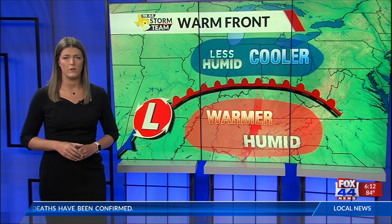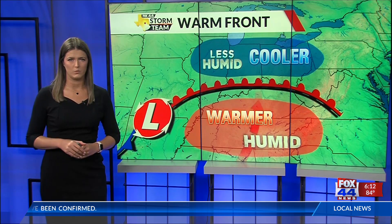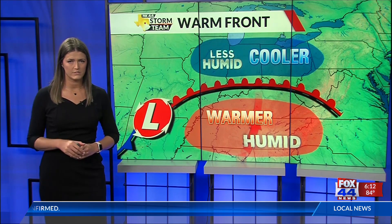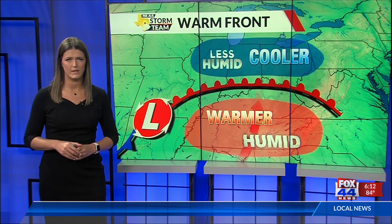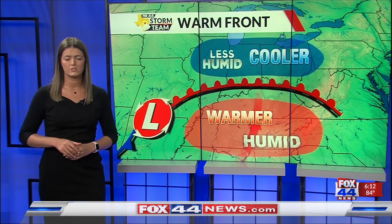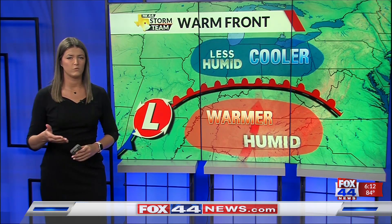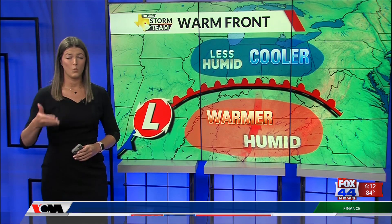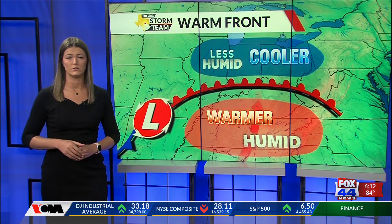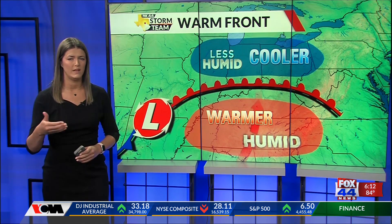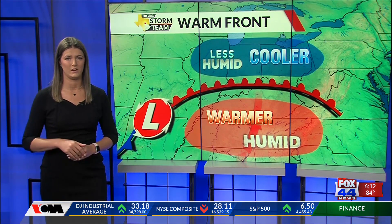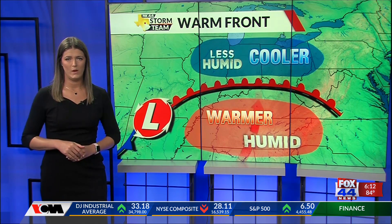Now opposite from this is a warm front, which looks like a red line with half circles attached to it. This is the boundary between a mass of warmer moist air retreating towards a mass of cooler, less moist air.